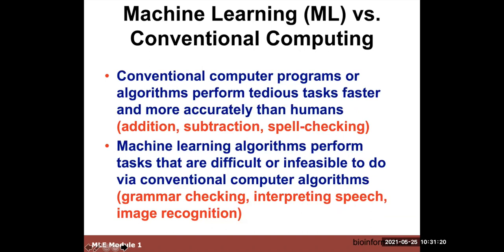Comparing machine learning to conventional computing: conventional computers do tedious tasks faster and more accurately — they're great for calculation and spell checking, where the computer looks up a word and compares it to a table of known correctly spelled words. Machine learning typically does things that are much more difficult, or not possible with conventional programs. While spell checking can be done with almost any program, grammar checking is much more difficult — grammar checkers on your computer represent an element of machine learning. Recognizing images, interpreting speech through Alexa or Siri — those are examples where machine learning shines.